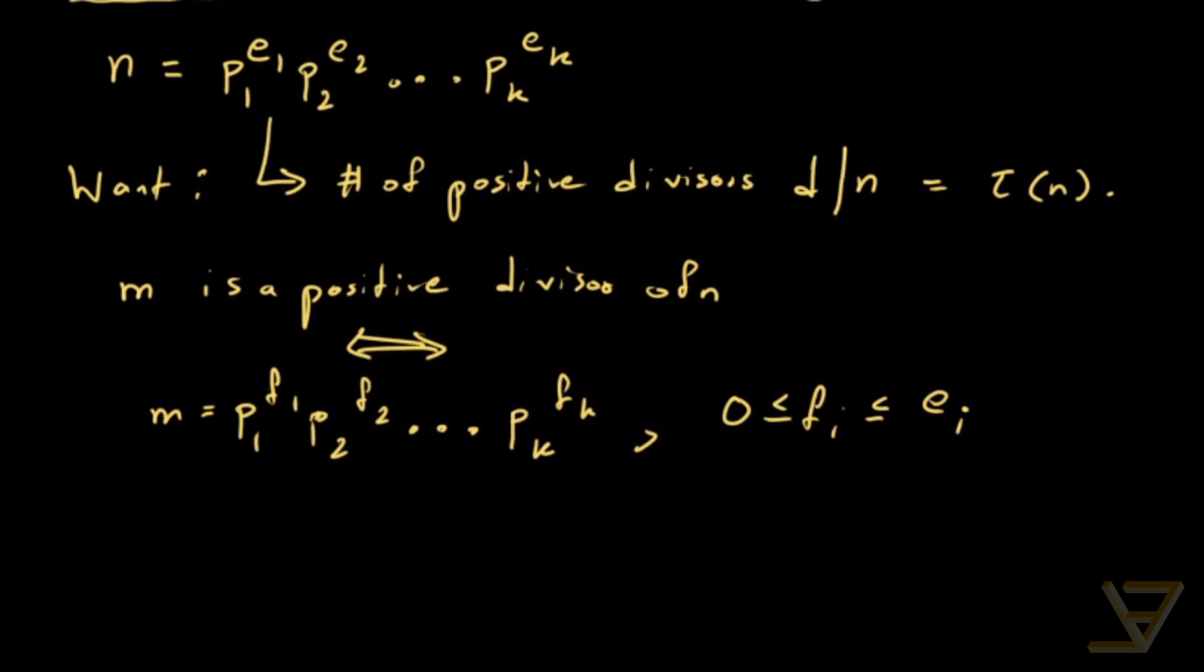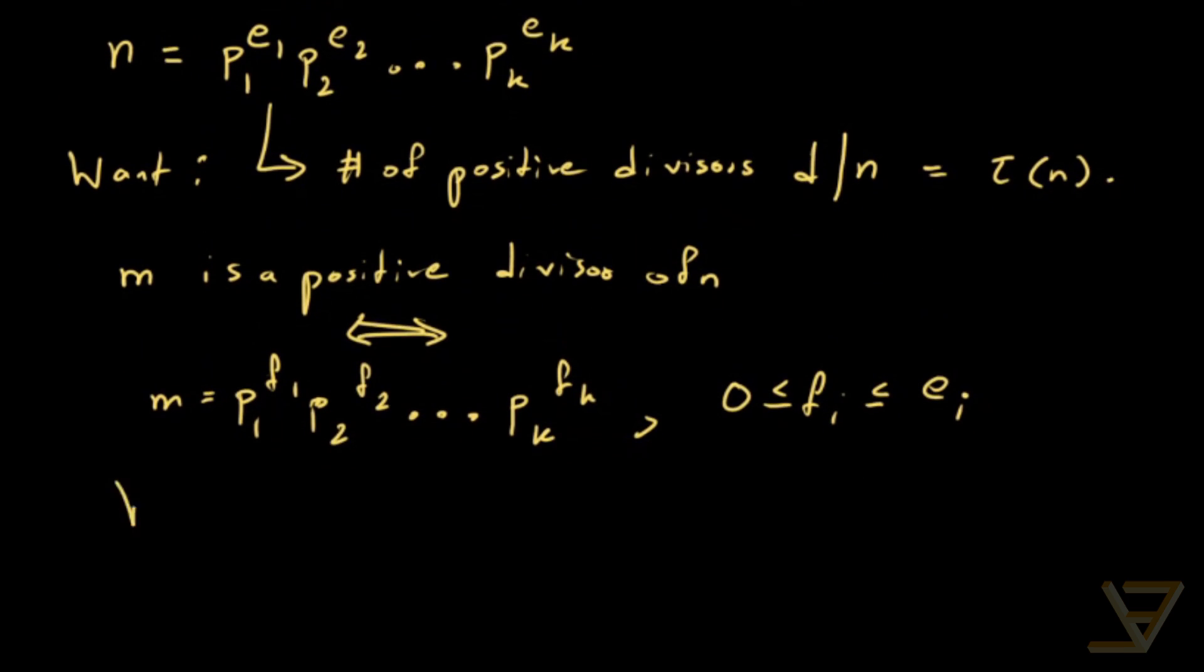There is a different way of stating this, which is that for all p that is a prime, nu p of m is less than or equal to nu p of n. And this is equivalent. Nu p just means the multiplicity. This is the multiplicity here, the exponent.